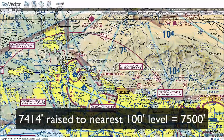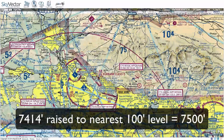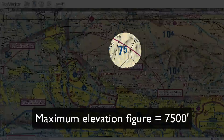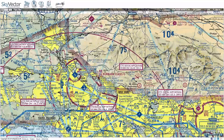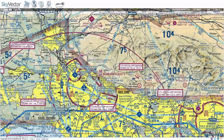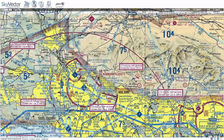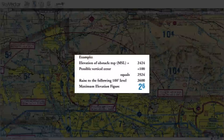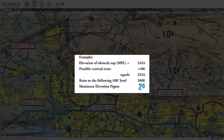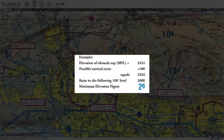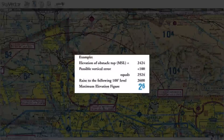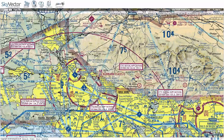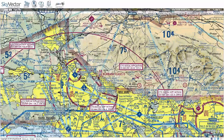This is a little bit different if the obstacle is man-made. When it's man-made, we're only going to be adding 100 feet of vertical error and then rounding up to the next 100. That's how you determine these maximum elevation figures, and this is definitely something you'll need to know for the test.